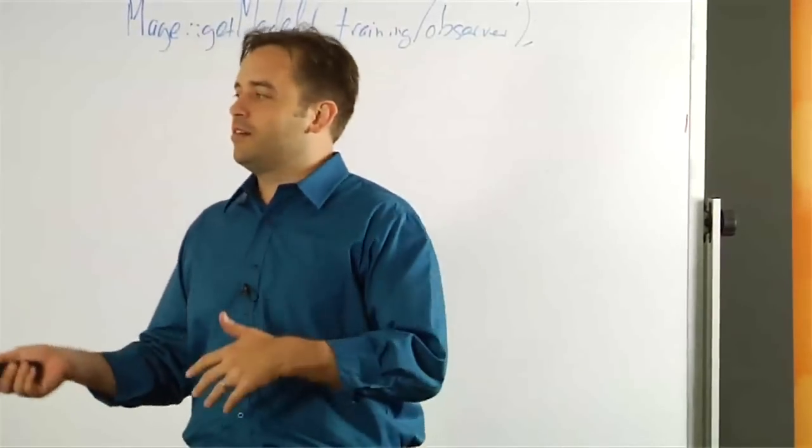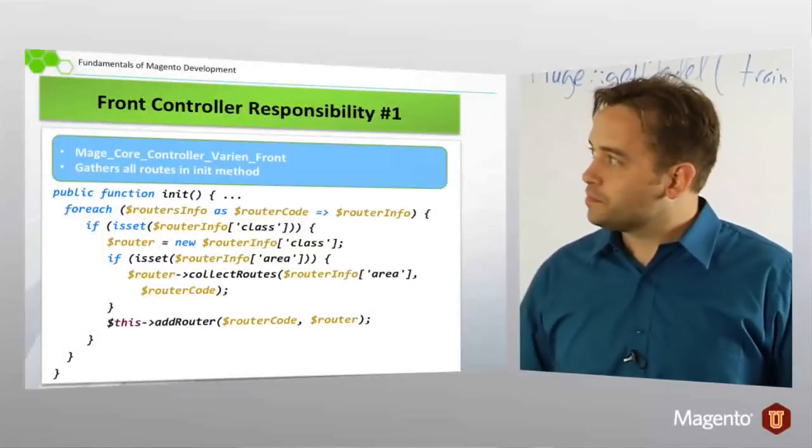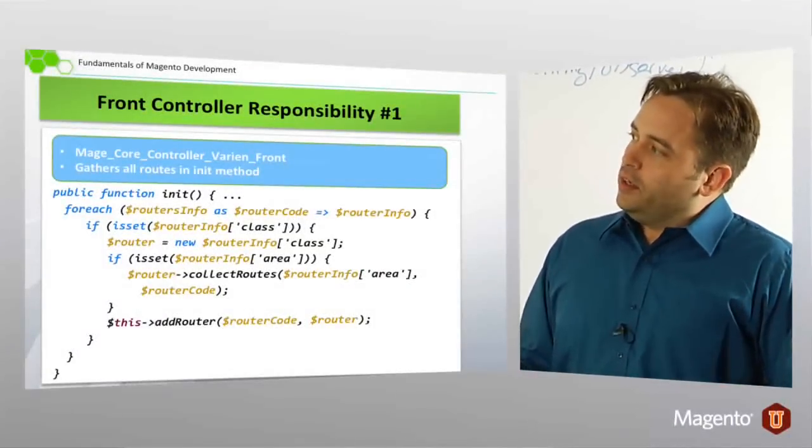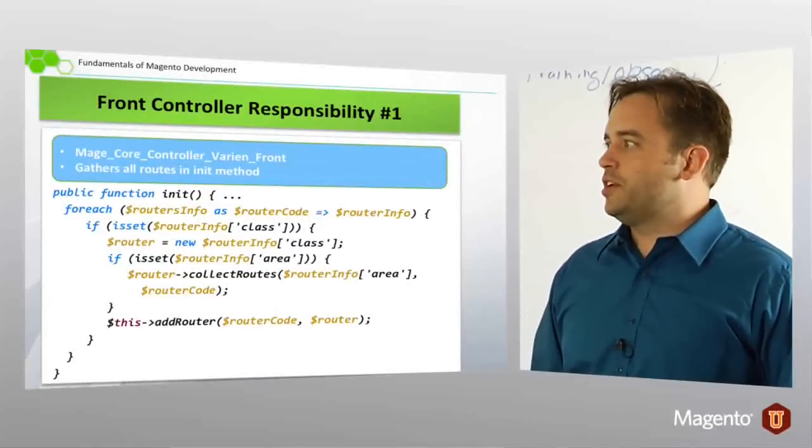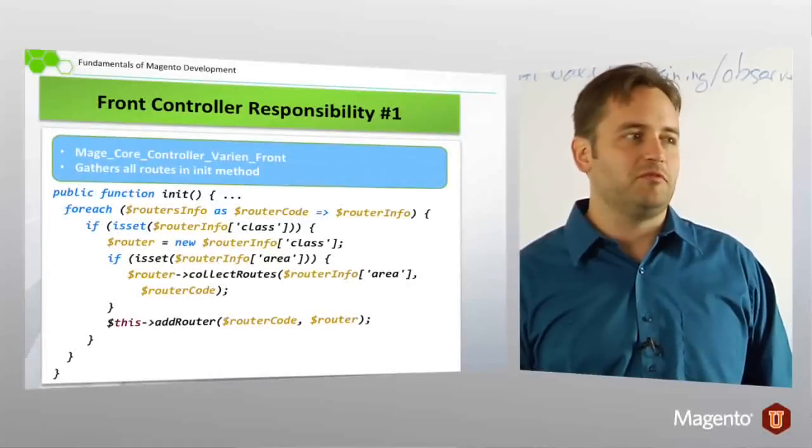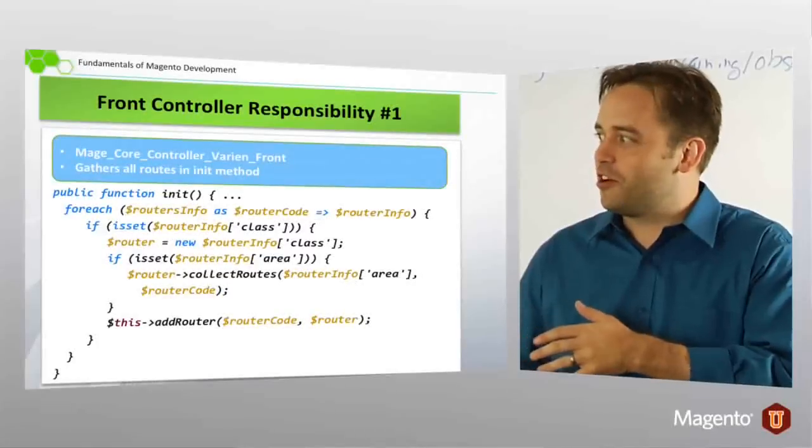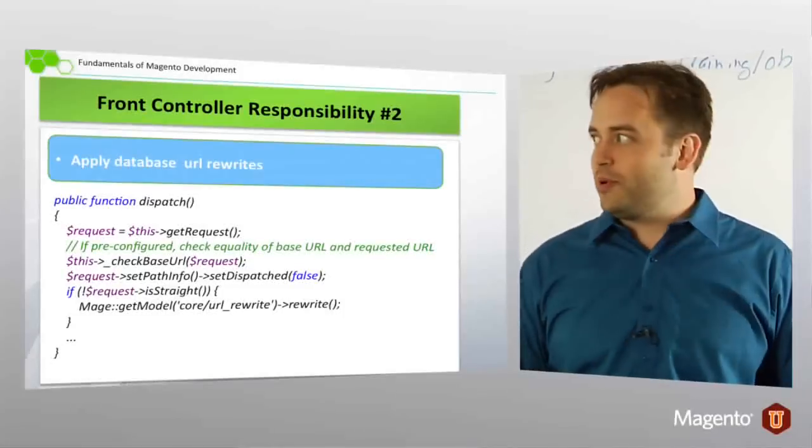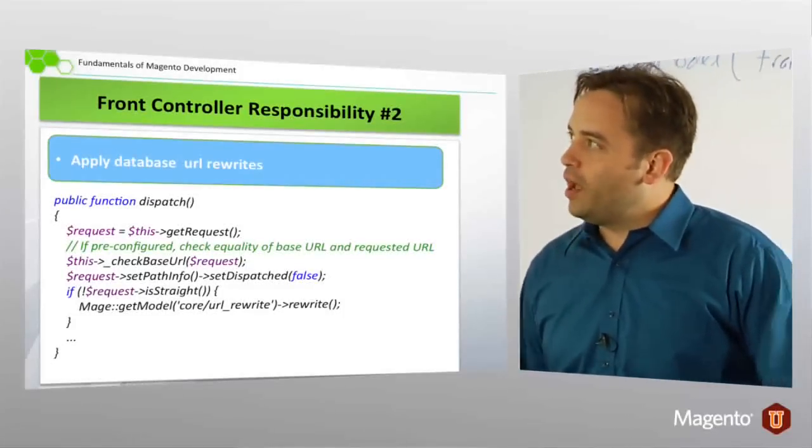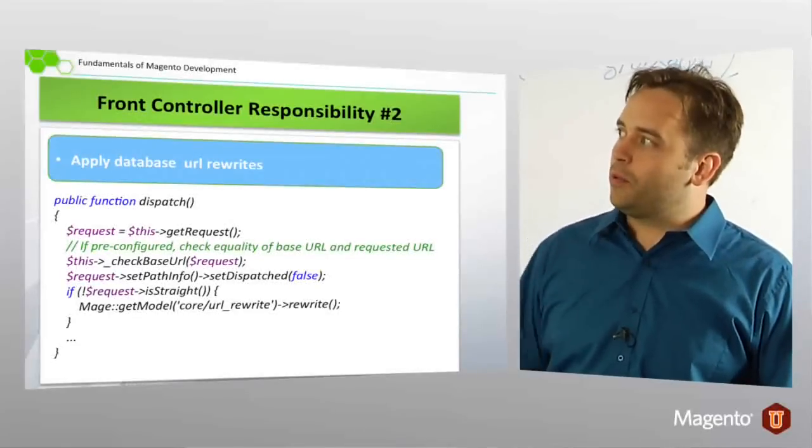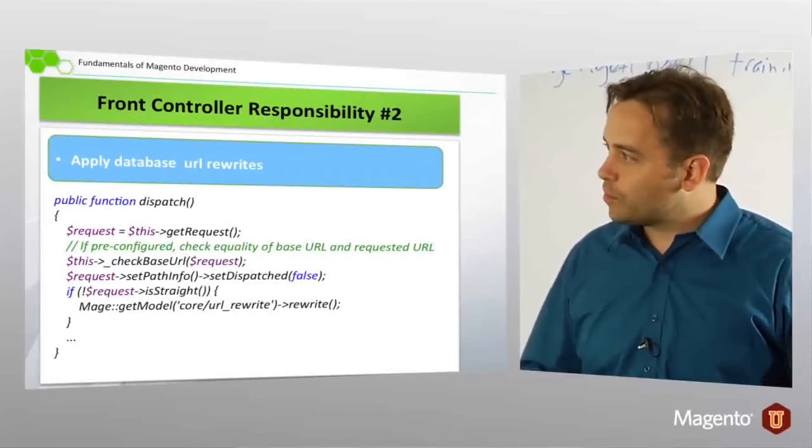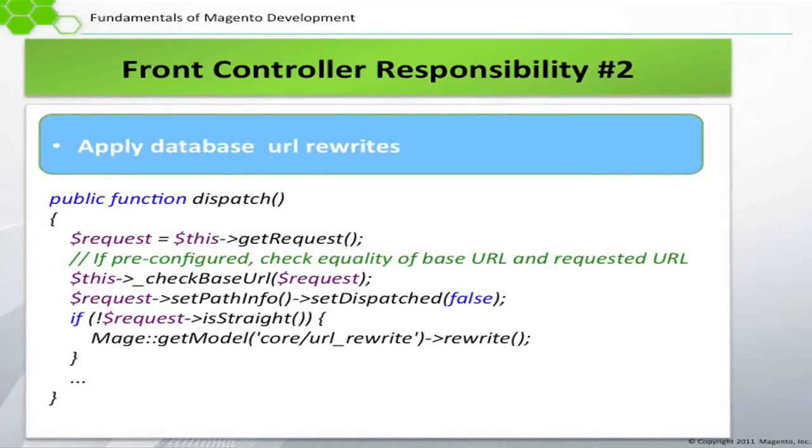So, if not though, we get our front controller and dispatch. Inside our front controller, there's this init method. And what we really do is we loop through our configuration files and build out a bunch of information. Just build out this array structure and add a router that we can then use to hopefully dispatch request. Then inside of dispatch, we apply database URL rewrites. This is mage get model core URL rewrite. So, this is actually where we get our, at this point we have our configuration object working. Magento internally uses its factory method to get this file. Where is this file found?